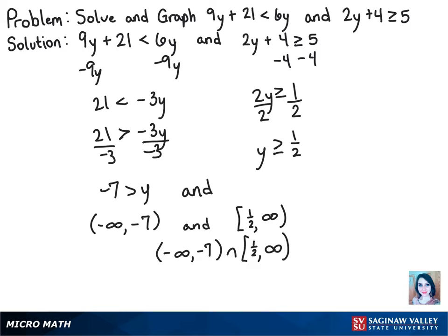If the and were an or, then yeah, that would definitely be valid. But since y cannot fill that criteria at the same time, there is no solution. And we're just left with an empty graph here. And we actually don't even need the interval notation either. And that's it.